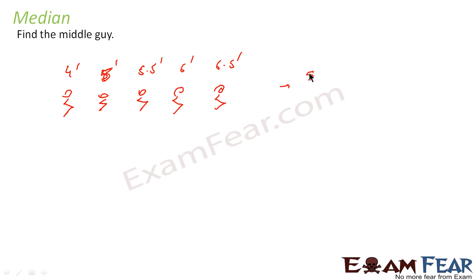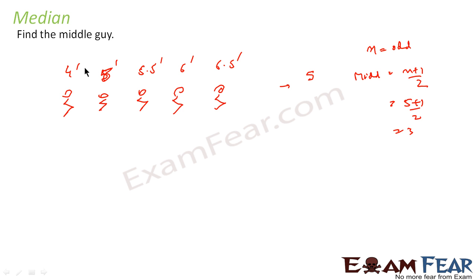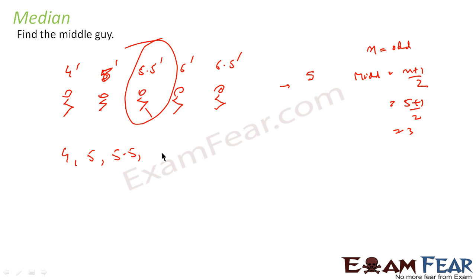Here the number of people are five, so the middle guy will be the median. We know that if n is odd, the middle term is n plus 1 by 2. So n equals 5, middle term is 5 plus 1 by 2, that is 3. So the third guy is the middle guy — and this is the median for the data 4, 5, 5.5, 6, and 6.5. The median is 5.5.